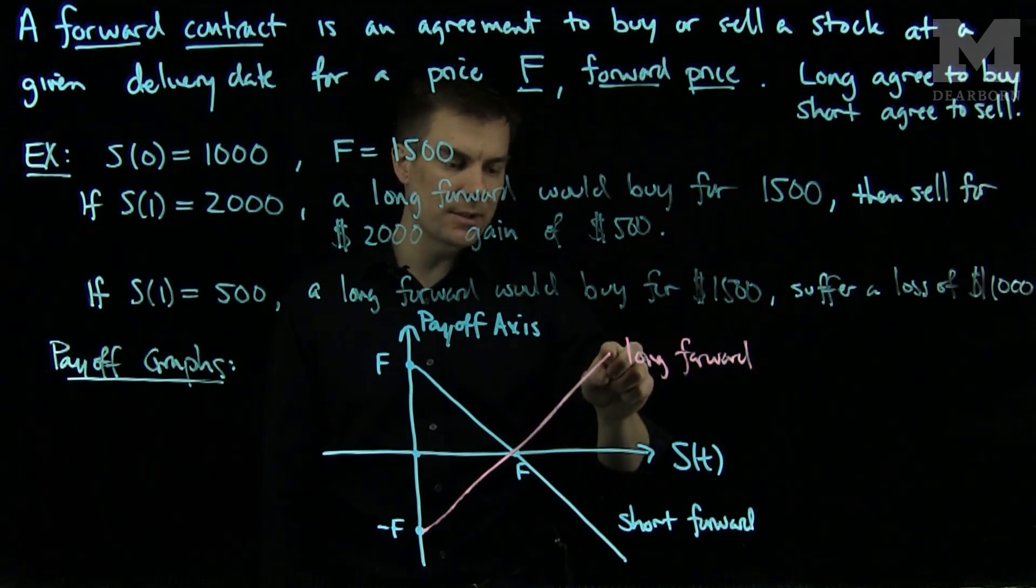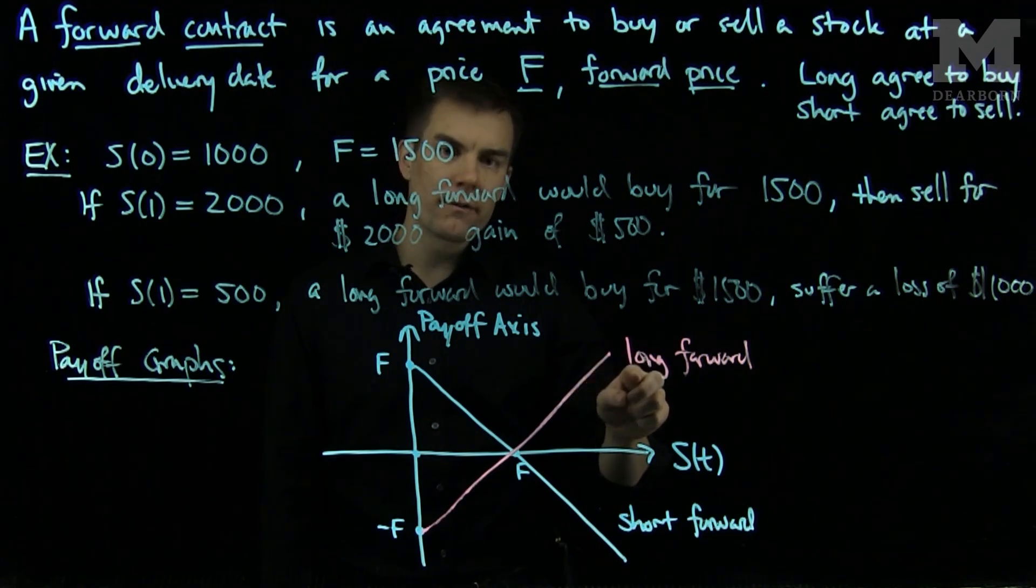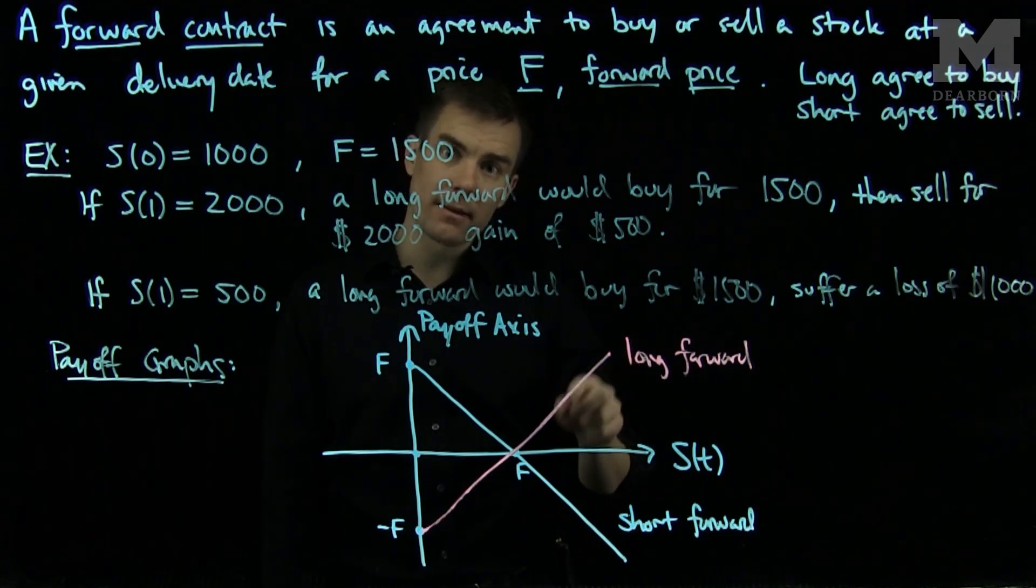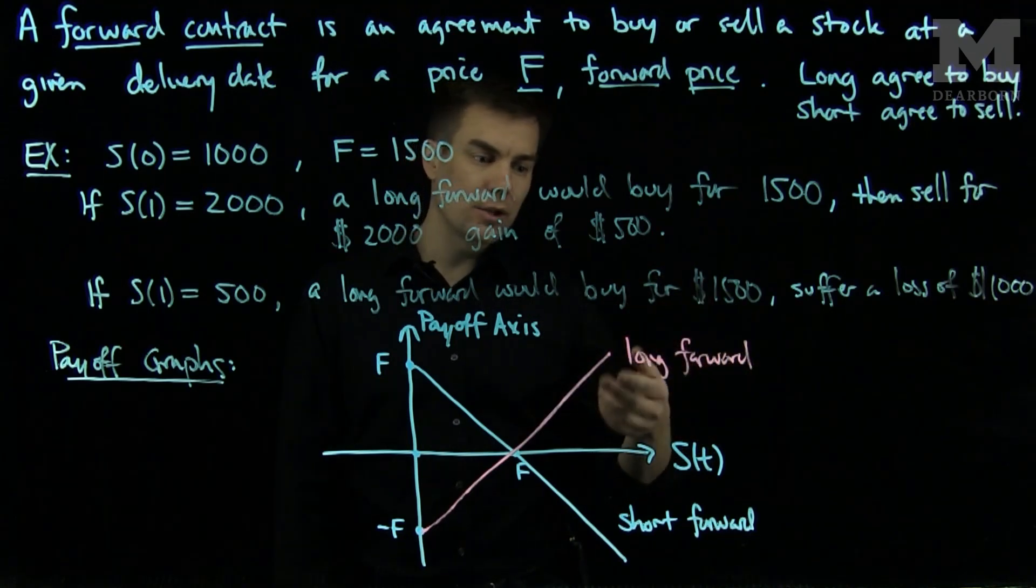For example, if the stock price is very large, say 15 times the forward price, the long forward position will buy the stock at the forward price of F and then immediately sell it for the larger value, getting an extreme gain.